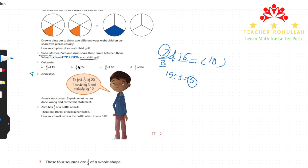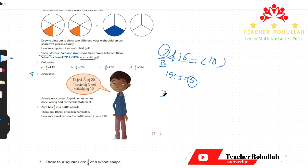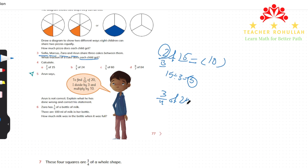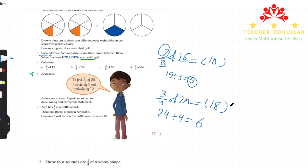Three-fourths of 24: to find this we divide 24 by 4. 24 divided by 4 is 6, meaning if we divide 24 into four equal groups each group has six. Three out of four equal groups equals 18.